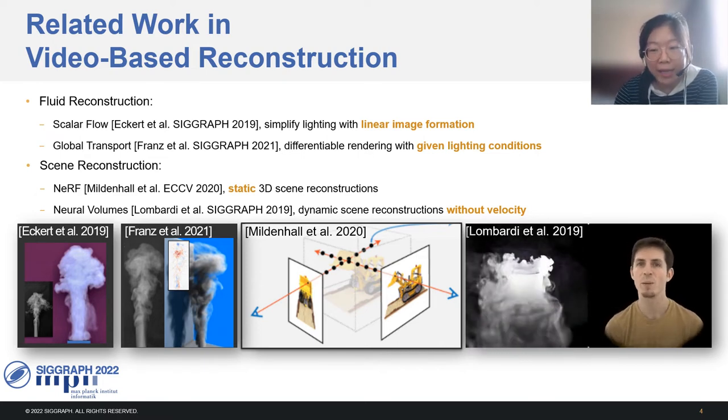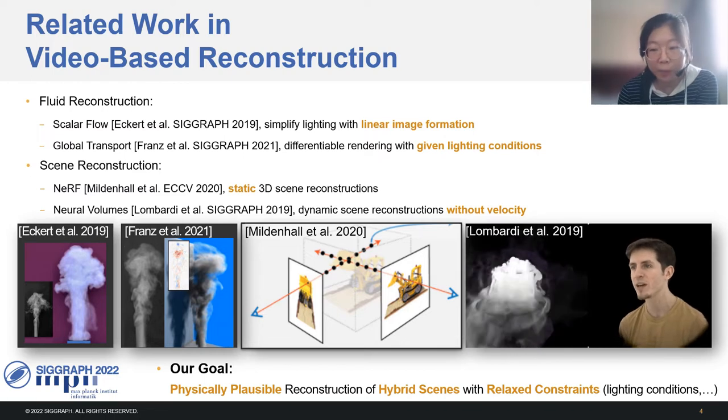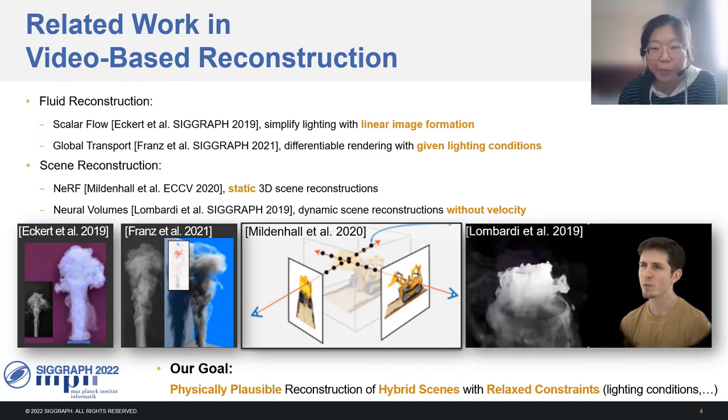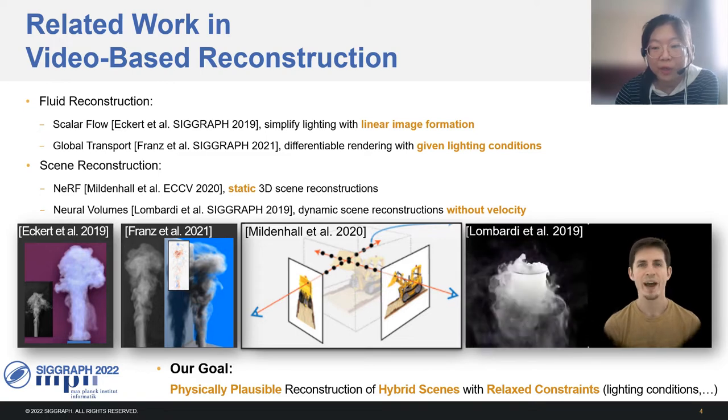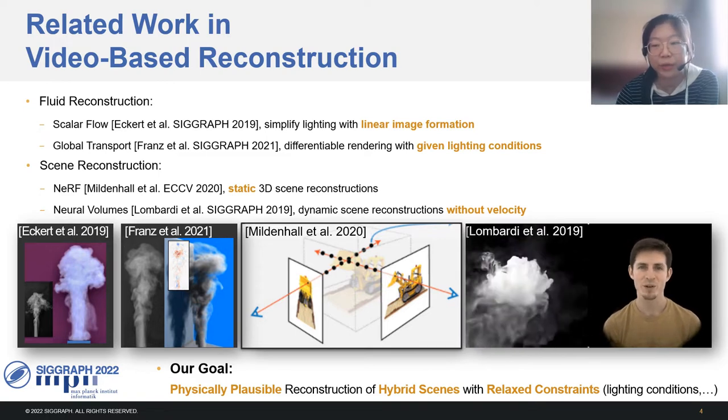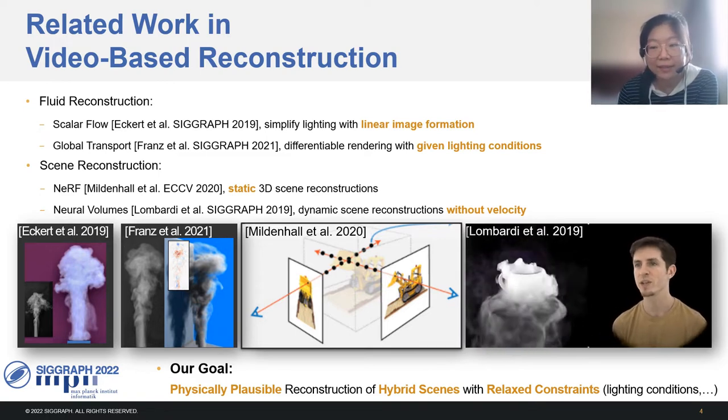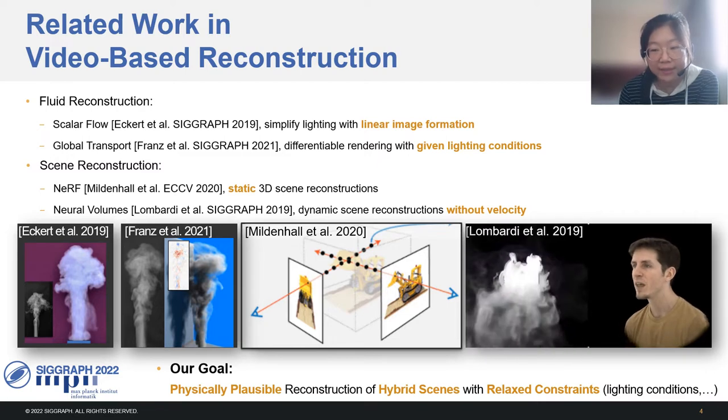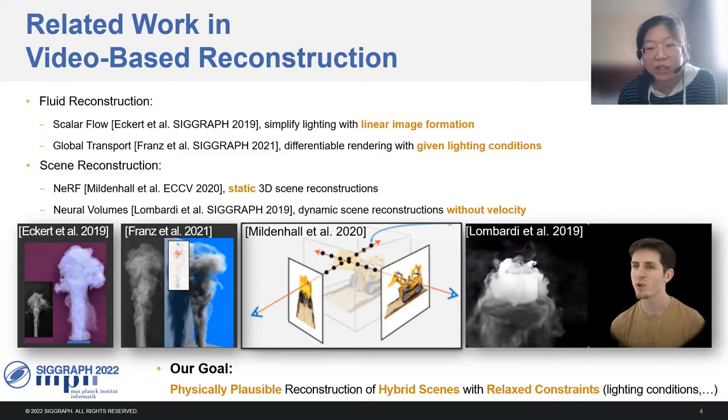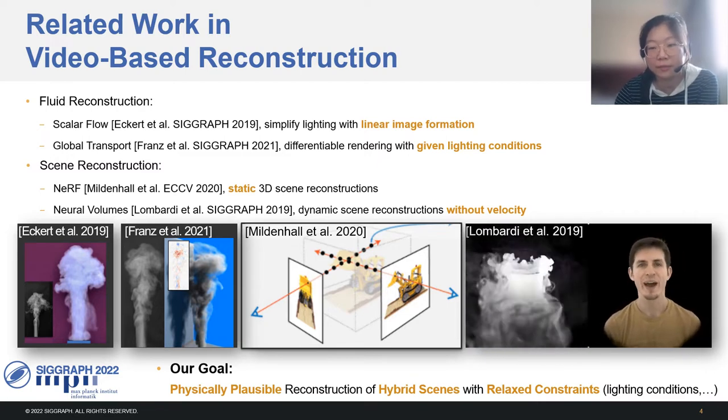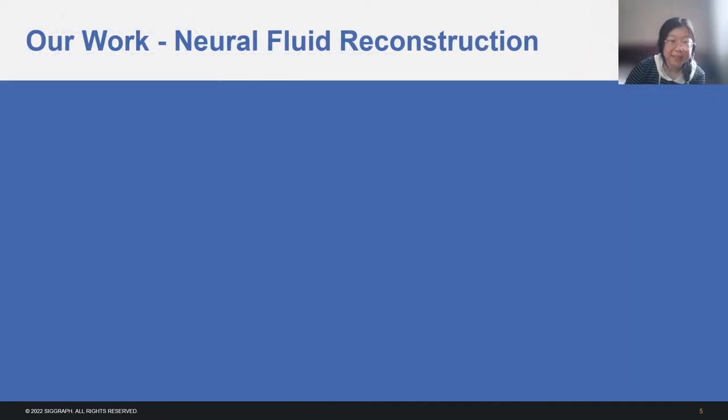In our work, we aim to provide physically plausible reconstruction of hybrid scenes, including not only fluid but also obstacles in arbitrary shapes. We want to relax the constraints and support scenes with unknown lighting conditions or obstacles. To achieve this goal, we propose a continuous implicit neural fluid representation.